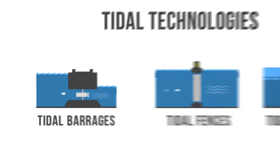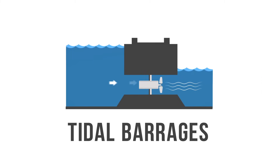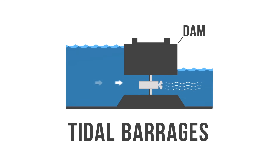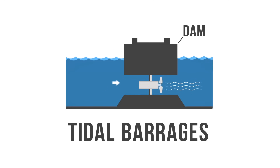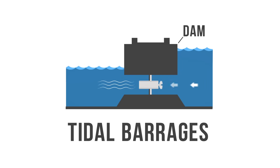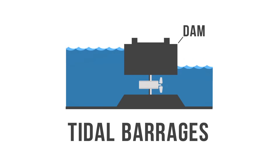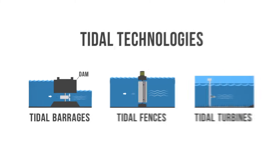Tidal barrages are the most efficient tidal energy sources. A tidal barrage is a dam that utilizes the potential energy generated by the change in height between high and low tides. This energy turns a turbine or compresses air, which in turn creates electricity.